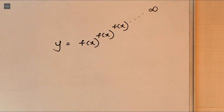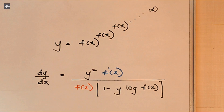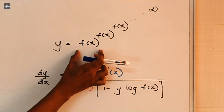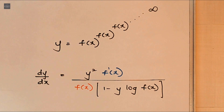Alright guys, so here we have the trick. Whenever we are dealing with questions of the form where y equals a function raised to the same function and so on till infinity — if the cycle continues — then the shortcut to get the answer is: dy/dx equals y squared times f'(x), all divided by f(x) times (1 minus y·log f(x)). Whatever function comes here, it has to be written in the numerator. So just pause and note down the trick, as we'll now quickly solve some examples using this shortcut.